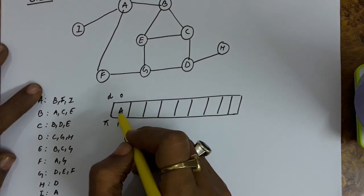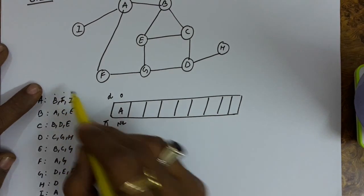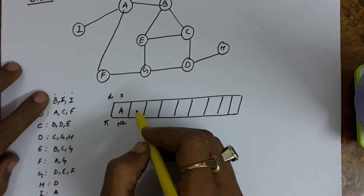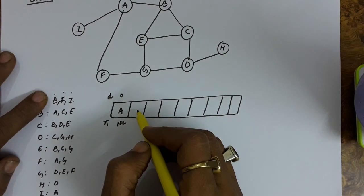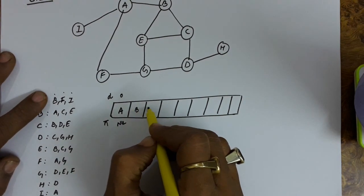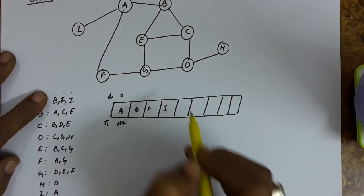From A we have the connections B, F and I. All these vertices B, F and I are of white color. So insert this in the queue.